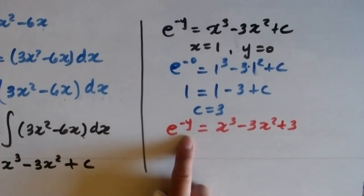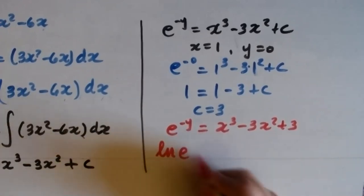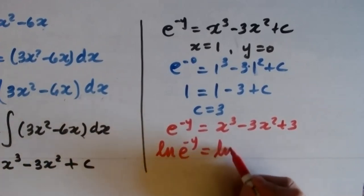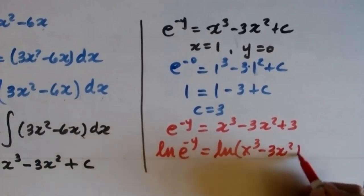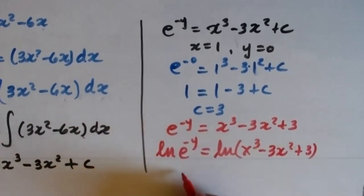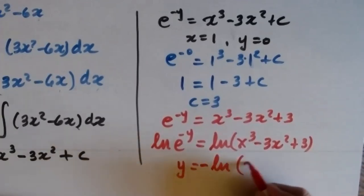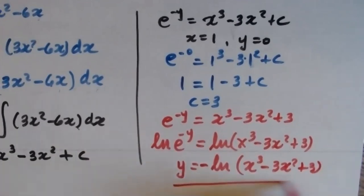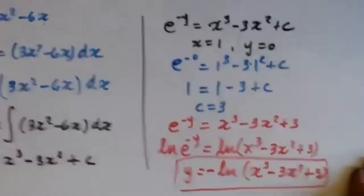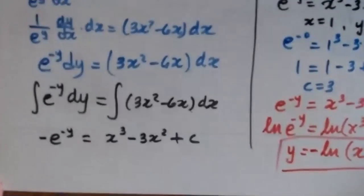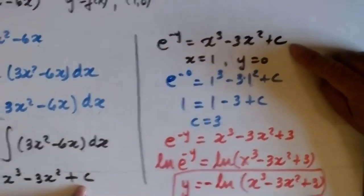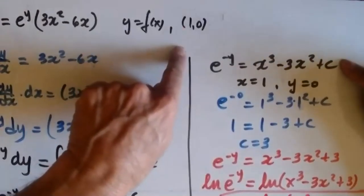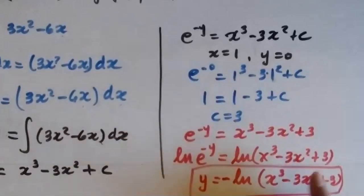To solve for y: take the natural log of both sides to cancel the exponential. ln(e^(−y)) = ln(x³ − 3x² + 3), so −y = ln(x³ − 3x² + 3). Moving the negative: y = −ln(x³ − 3x² + 3). It's very repetitive — same structure: separation of variables, integration, determination of the constant of integration.